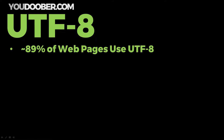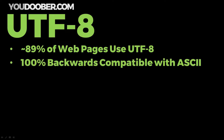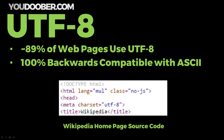But that's not all — the current encoding standard used today is UTF-8, which is used by 89% of web pages all over the internet. It's 100% backwards compatible with ASCII, so if something is encoded with ASCII, UTF-8 can still decode it. I did a little experiment: I went to the Wikipedia homepage and looked at their source code.